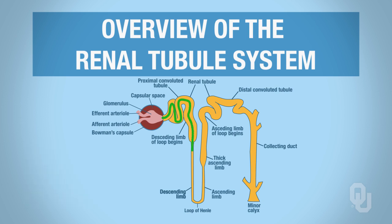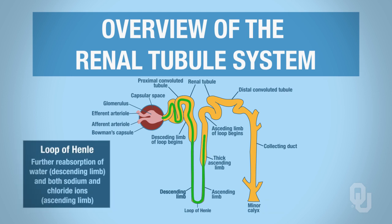That filtrate's got to pass through the descending loop of Henle. Then there's the ascending limb, the thin part of it, and then the thick ascending loop of Henle. So your filtrate's following this pathway.